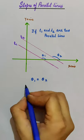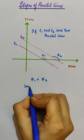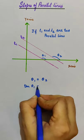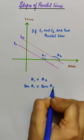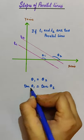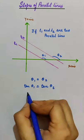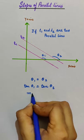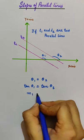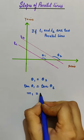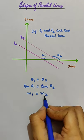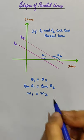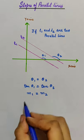So tan(theta 1) will be equal to tan(theta 2). What is tan(theta 1)? Tan(theta 1) is the slope of line l1, and tan(theta 2) is the slope of line l2.